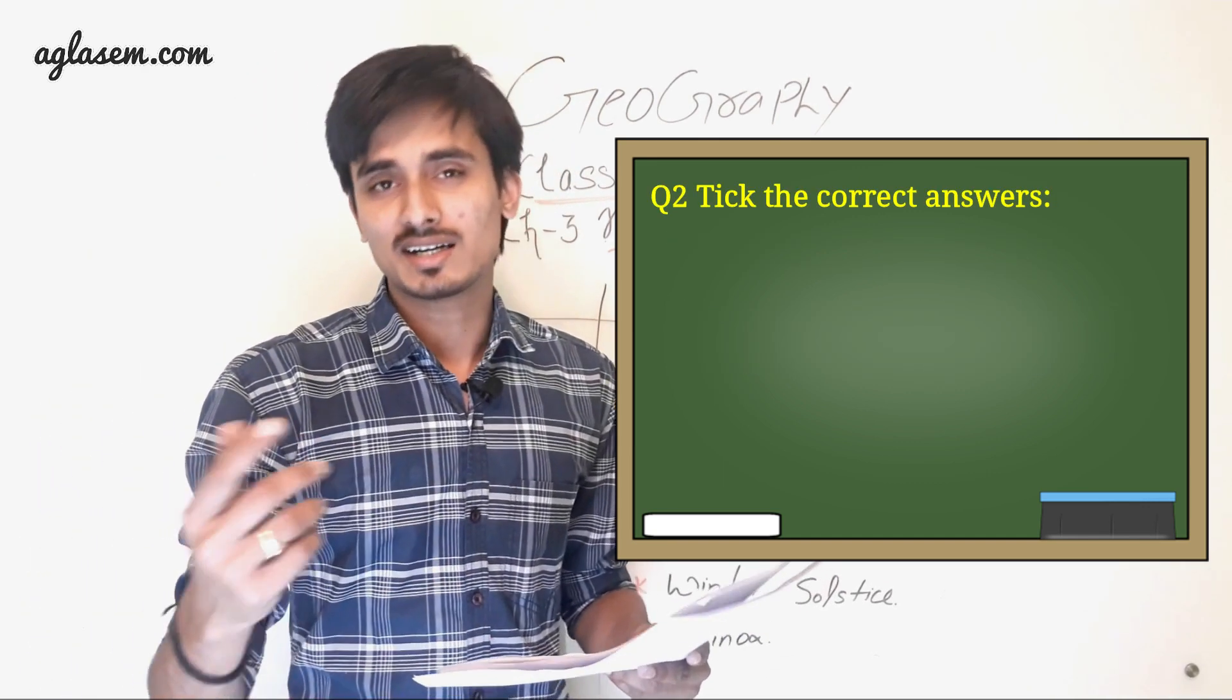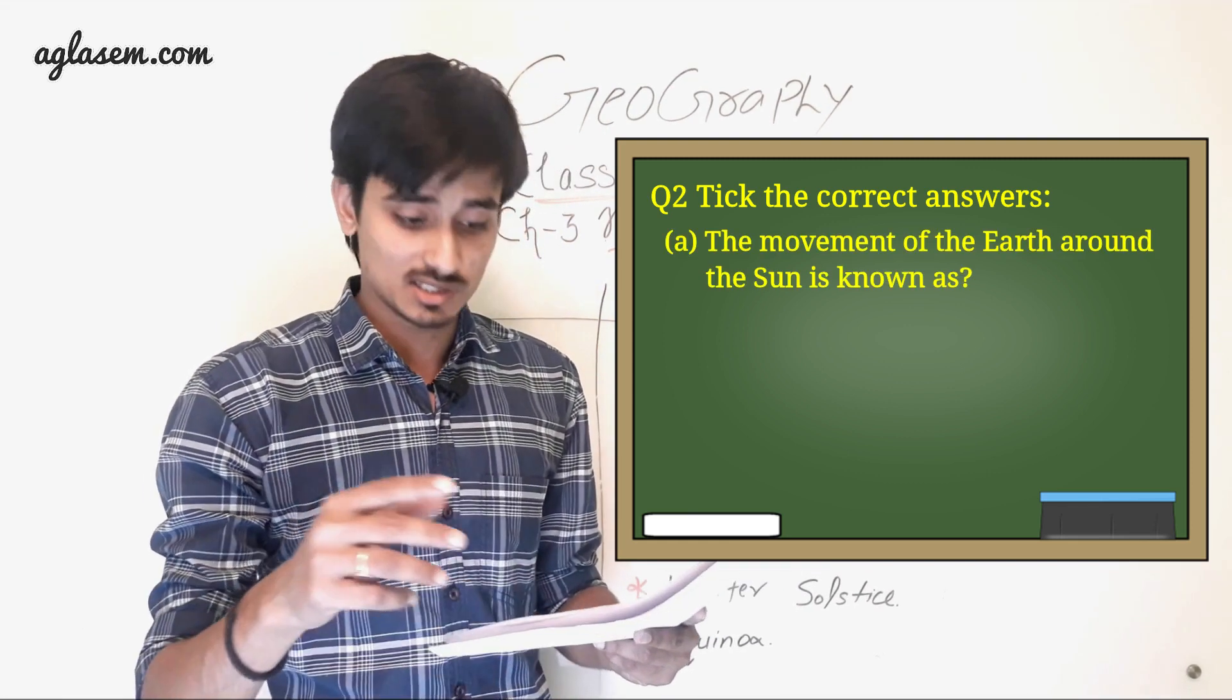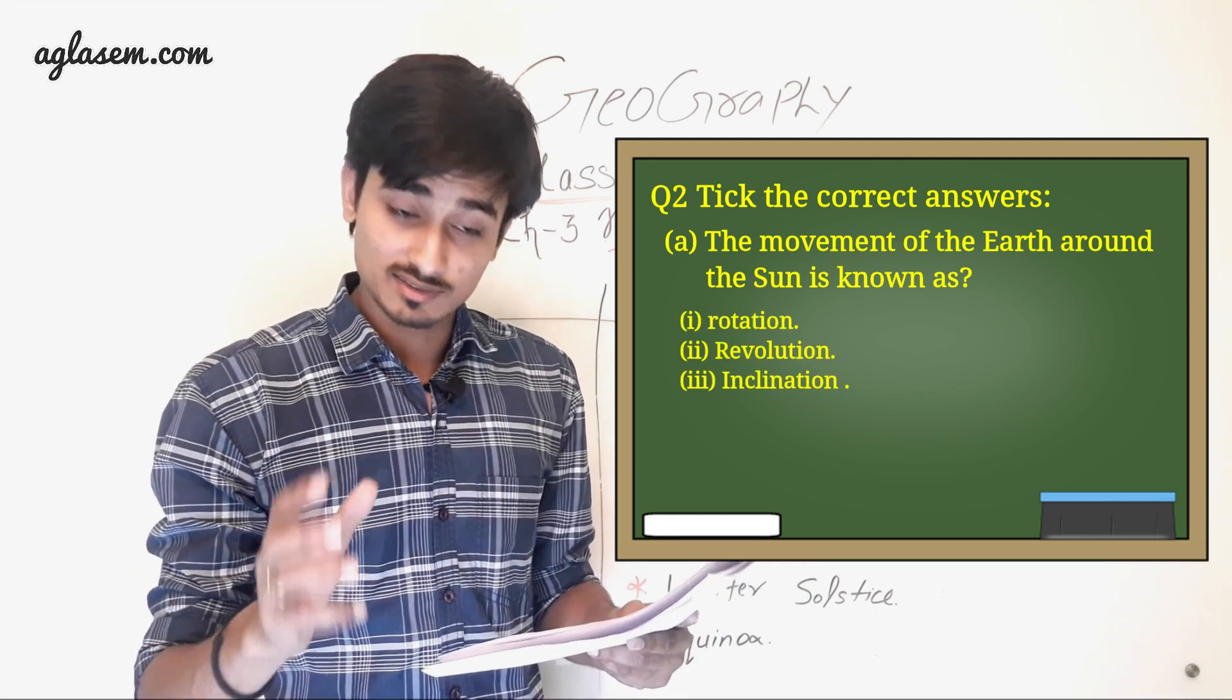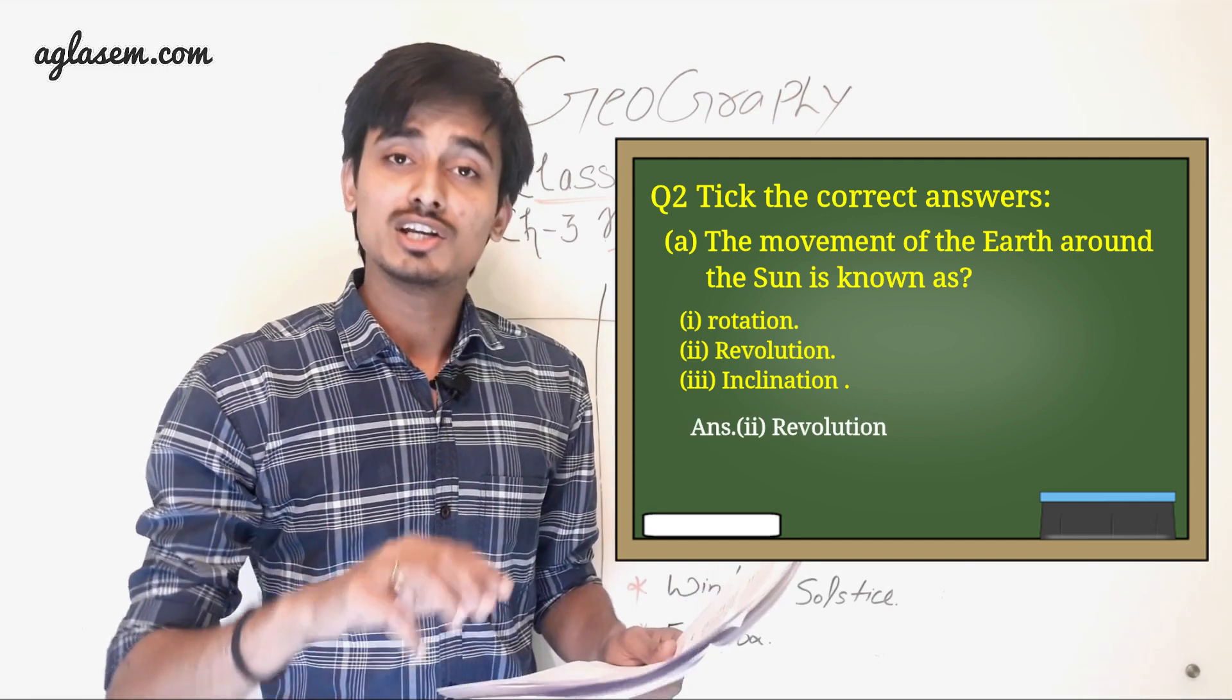The second question: Tick the correct answer. A. The movement of the Earth around the Sun is known as. So options are: First, rotation. Second, revolution. And third, inclination. So answer is revolution.